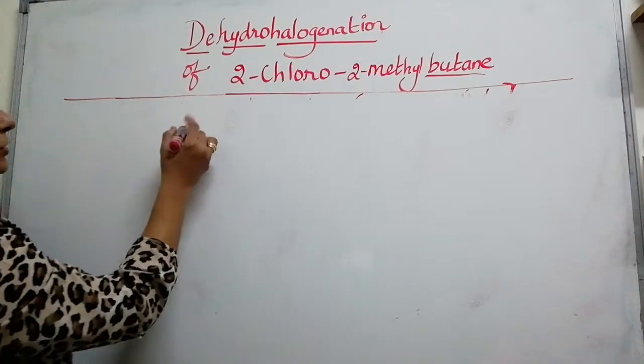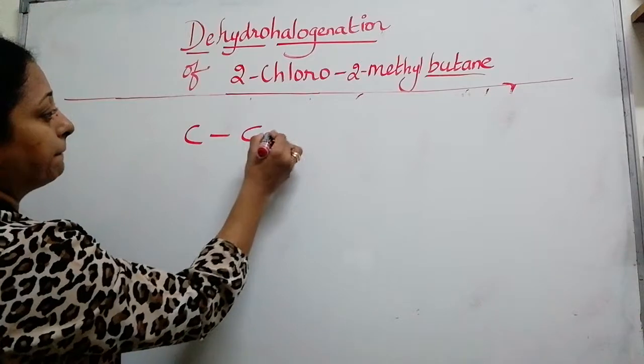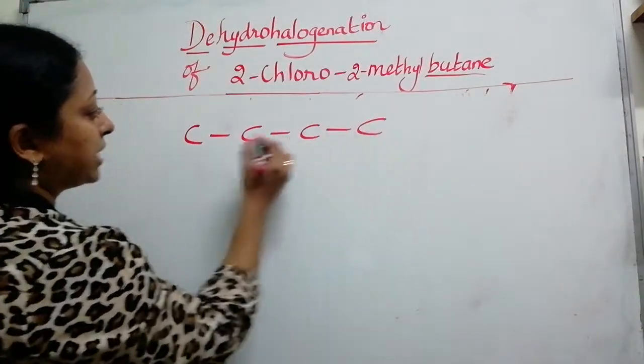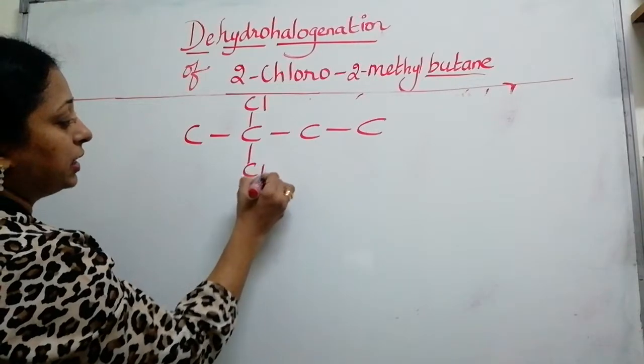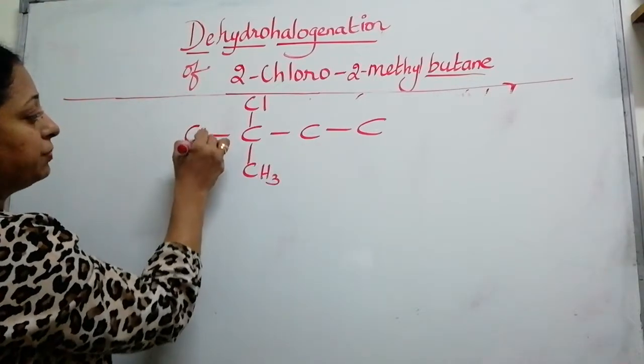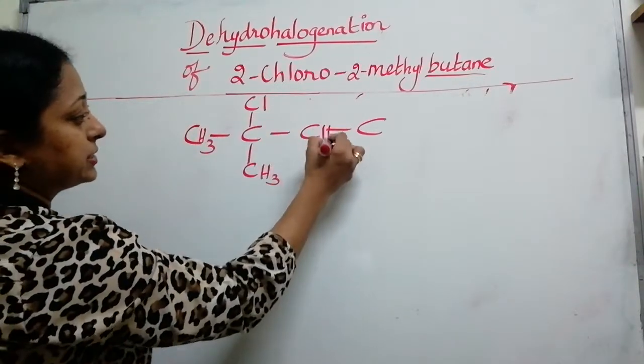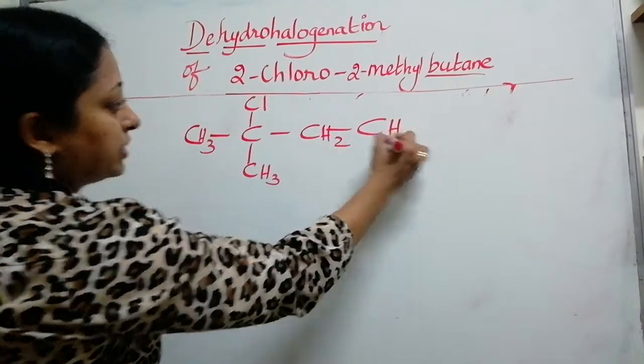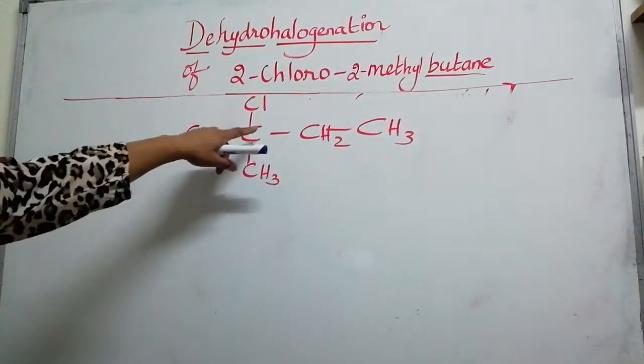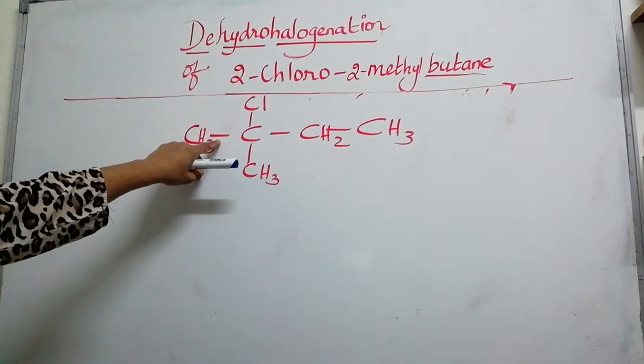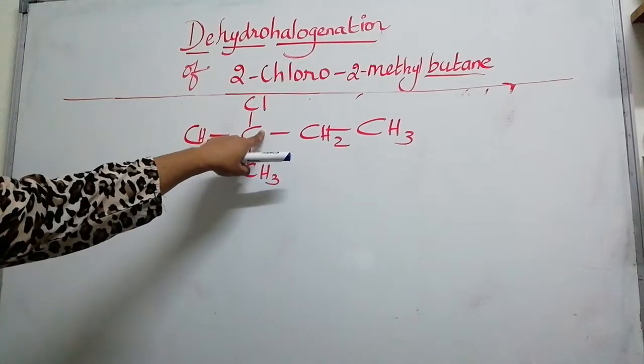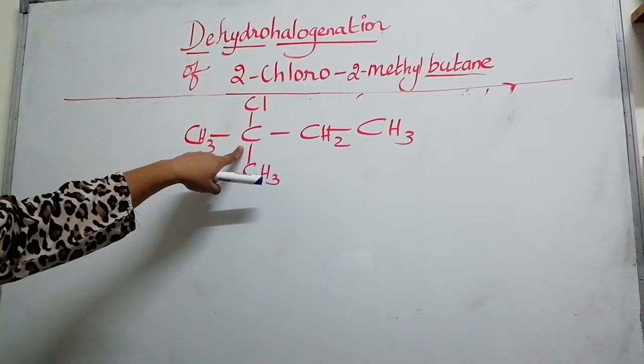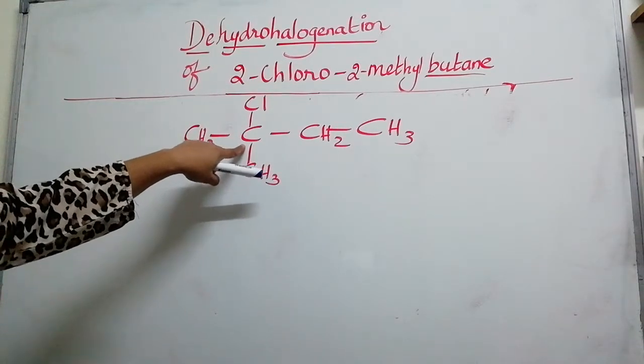First draw the structure correctly. Second position, we have a chlorine and a methyl group. The remaining should be filled with hydrogens. So most of the time you make a mistake of putting a hydrogen here. Here already carbon is satisfying the valency of 4. Therefore no need to put any hydrogen in this carbon which is very important to note.